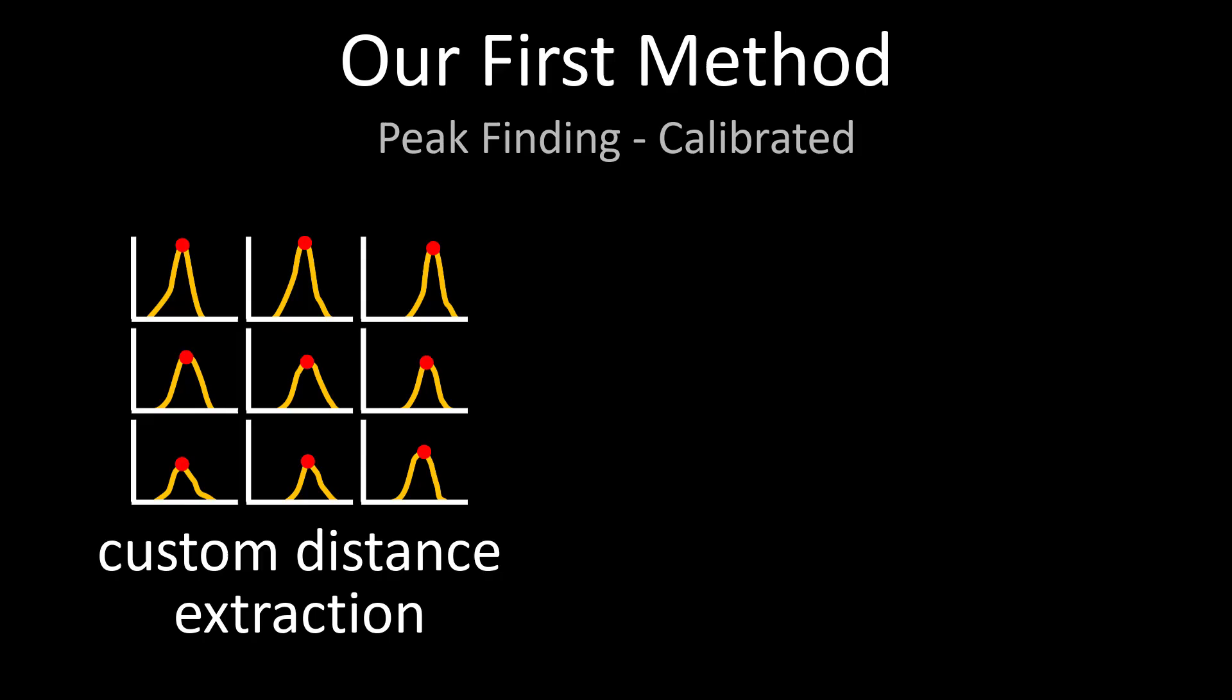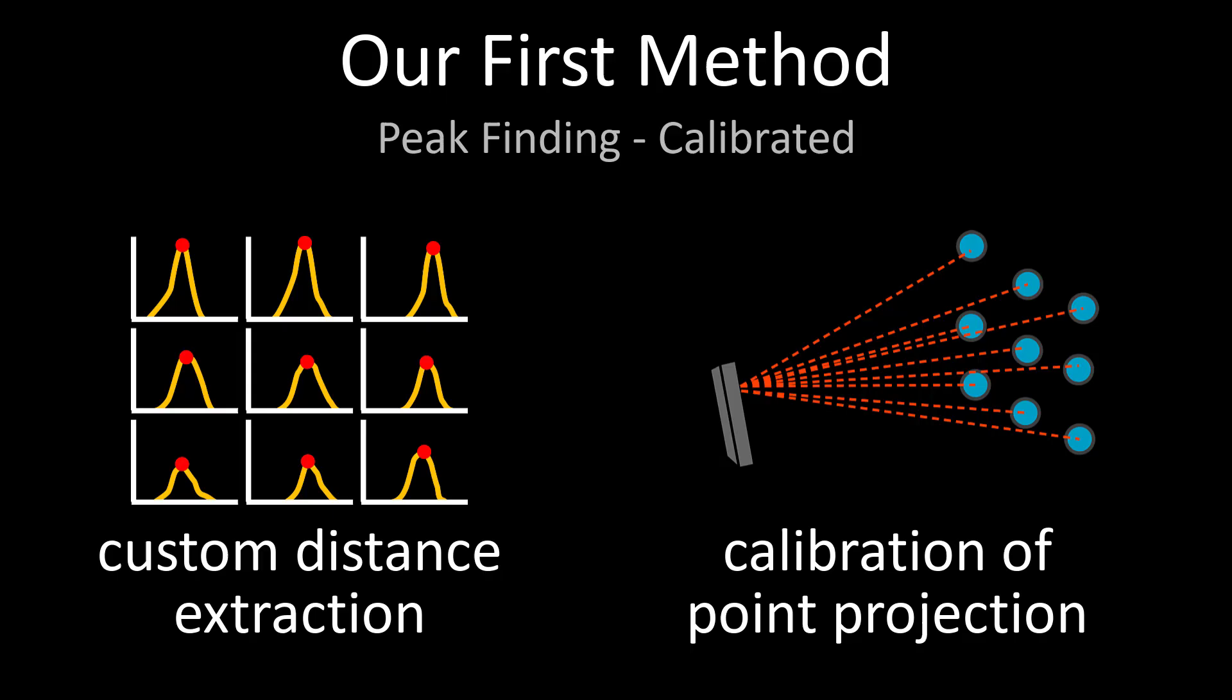Our first method includes two simple improvements to this baseline. First, we extract distances ourselves by finding the temporal location of the peak in the transient histograms, rather than relying on proprietary distance estimates, which we found to be less reliable. Second, we introduce some additional parameters to the point projection step, which we tune on a large ground truth data set to yield maximum accuracy of the recovered plane.